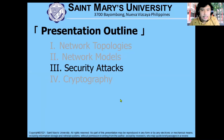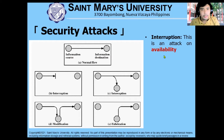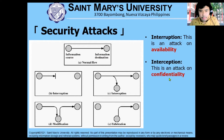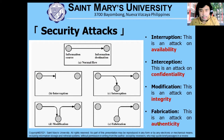Now let's proceed to security attacks. Normally, information is transferred from the source to the destination without issue. However, there are certain attacks on our communication channel. The first is interruption, which is an attack on the availability of the data. Another is interception, which attacks the confidentiality of the data. Next is modification, which alters the data. Finally, fabrication is an attack on the authenticity of the data.